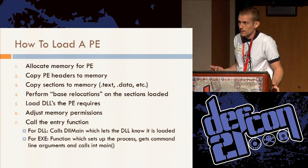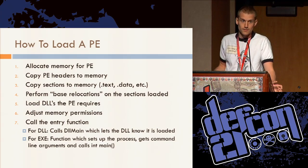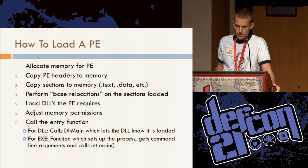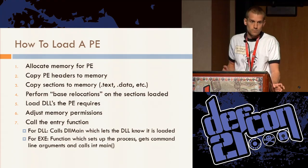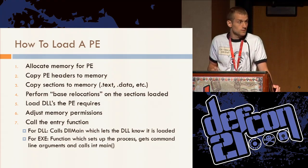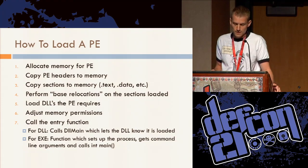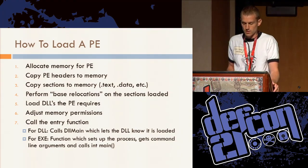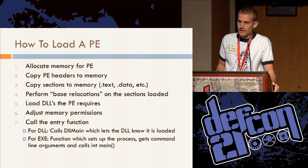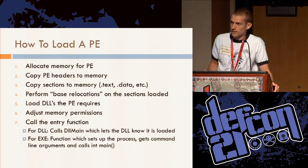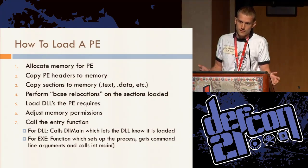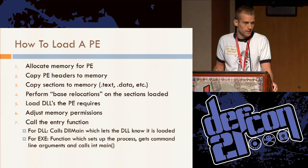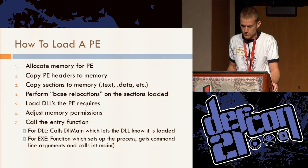Next, the PE file you're loading probably has dependencies on other DLLs, so you need to load those. Then the last step is calling the entry function. For a DLL, this is the DllMain function, which just lets the DLL know it's been loaded. For an EXE, it's a function that does some initialization and eventually calls something like main in C or C++.